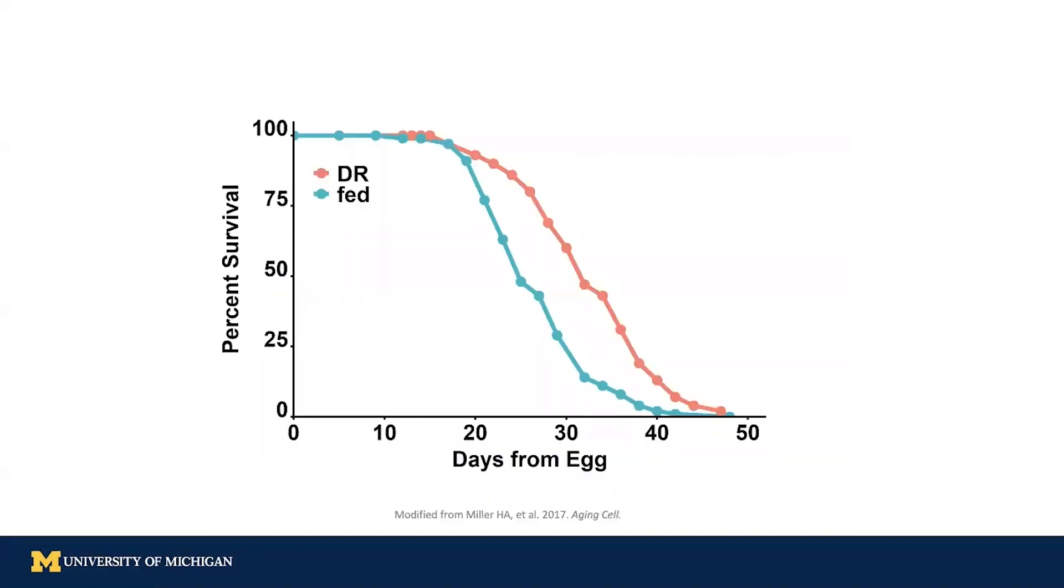This is a typical lifespan curve. You can see that the red curve shows worms under dietary restriction, and they have a higher survival rate than the fat worms at the same days of life.